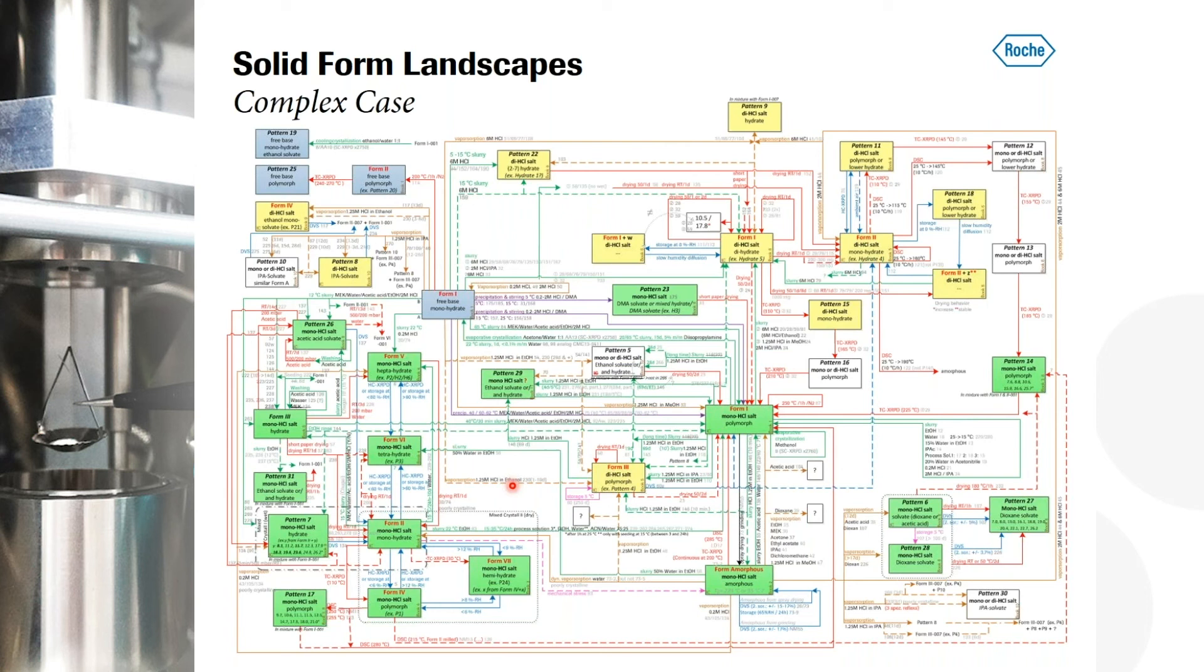At the end, you want to convince yourself that your process is robust and also the health authorities that you have a robust process in place to produce the selected solid form. And to do so, you need to understand all those arrows in this area. And DVS is one of the instruments, especially with a coupling, to elucidate a lot of these transition paths.